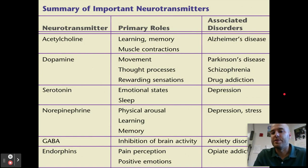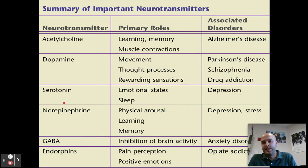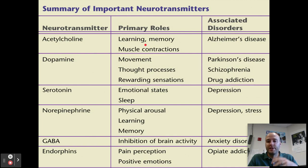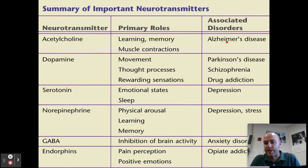Now we need to go over some important neurotransmitters you should know — the classic ones most likely to appear in AP psychology. First, we have acetylcholine. Acetylcholine's primary roles are for learning, memory, and muscle contractions. That's the neurotransmitter sent when we're building memory, telling our muscles to contract, or when we're learning. Each neurotransmitter also has associated disorders from an undersupply or oversupply. Acetylcholine's most common associated disorder is Alzheimer's disease.